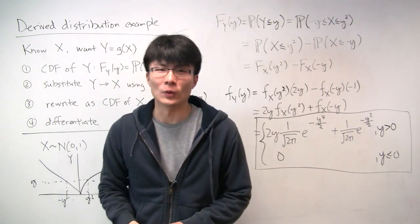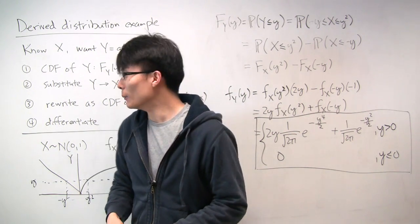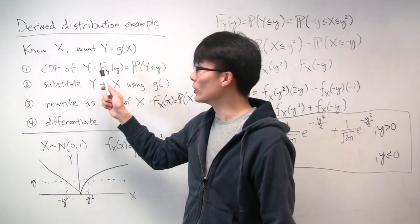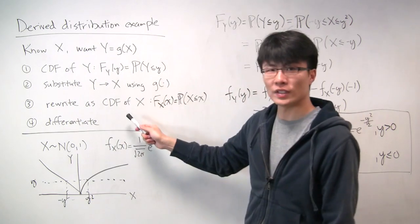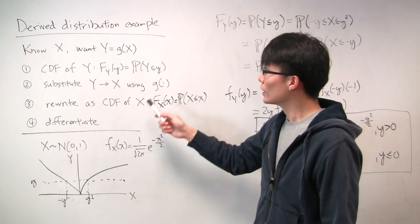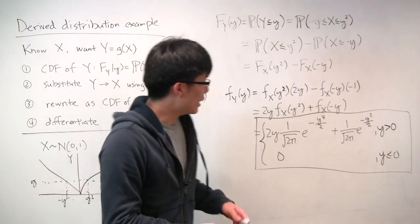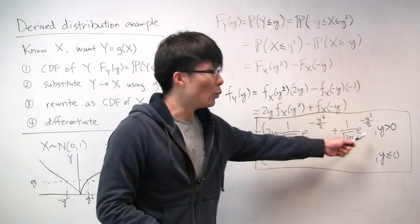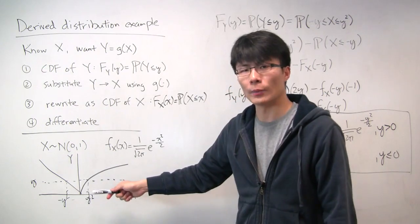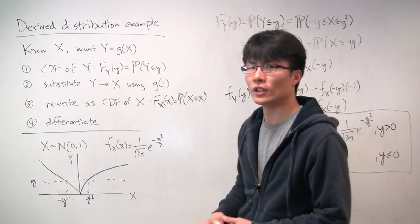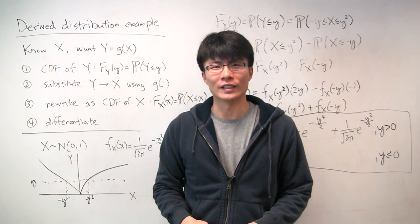These derived distribution problems may seem difficult at first, but if you remember the straightforward four steps and follow them methodically, you can find the solution for any such problem. One last thing: always think about the ranges where the PDF is valid, because the relationship between the two random variables can be complicated, and you need to be aware of when things are non-zero. I hope that was helpful — see you next time.